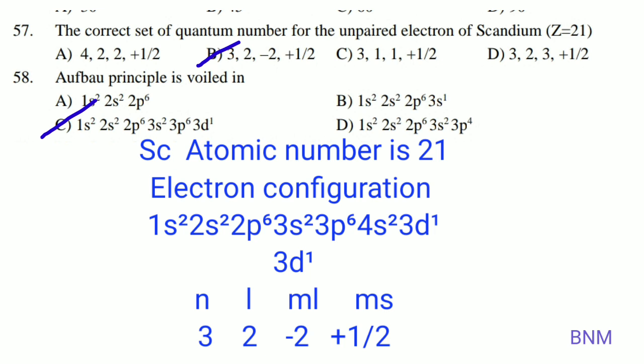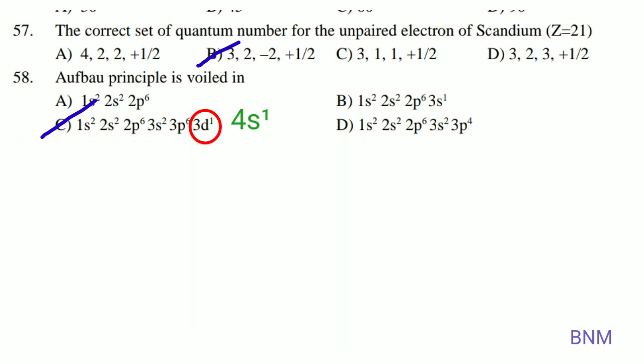Configuration 1s², 2s², 2p⁶ represents the least energy arrangement for the first electrons. Option A follows the Aufbau principle. Option B is 1s², 2s², 2p⁶, 3s¹ — this also follows the Aufbau principle. In option C: 1s², 2s², 2p⁶, 3s², 3p⁶, then 4s and 3d are considered.